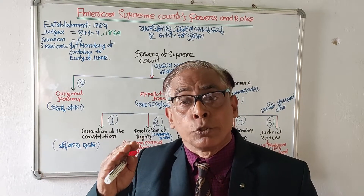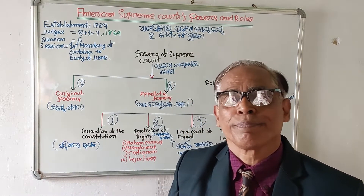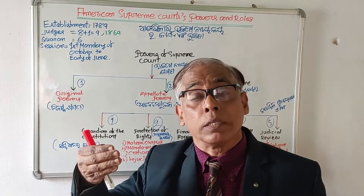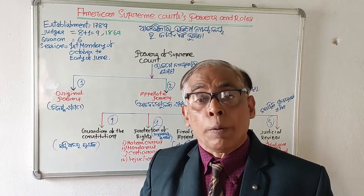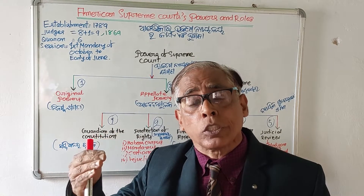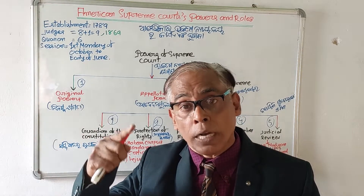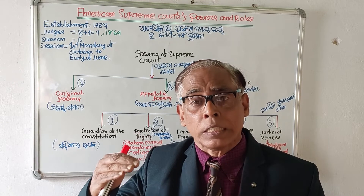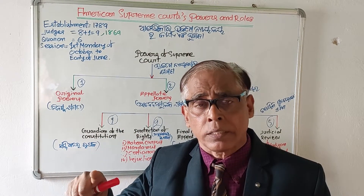In the American judicial system, the American Supreme Court stands at the top. No institution in America has as much prestige as the American Supreme Court. It is said that if the American Constitution is studied without the American Supreme Court, it is equivalent to studying the solar system without the sun — meaning the American Supreme Court has as much importance in the American Constitution as the sun has in the solar system.